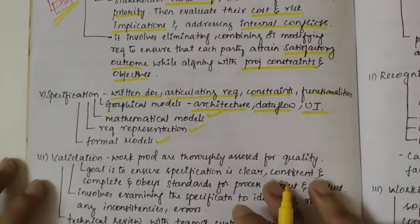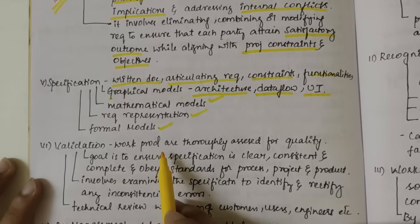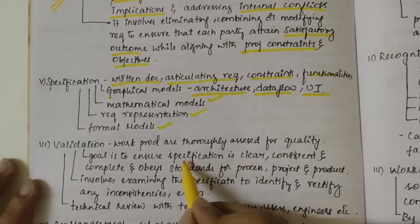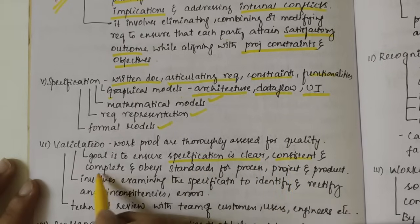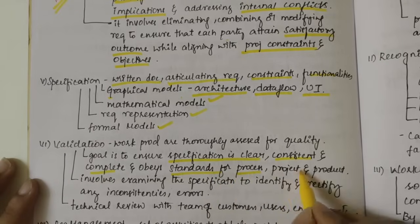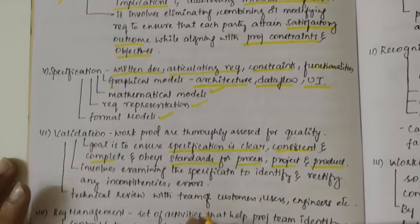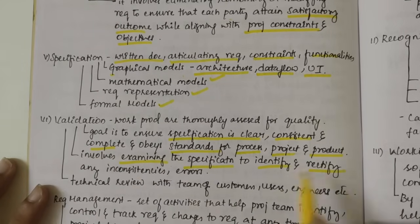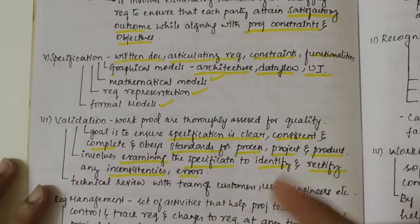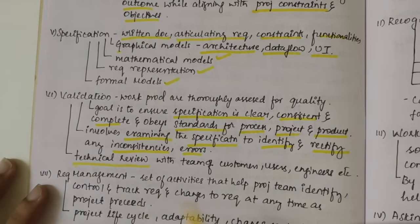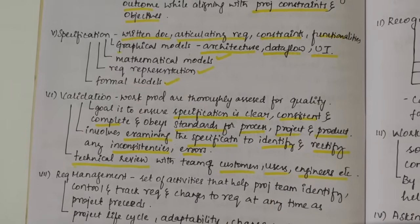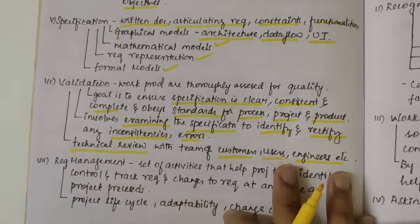After specification, we have Validation. Work products are thoroughly assessed for quality. Our goal is to ensure the specification is clear, consistent, and complete, and that it obeys standards for process, project, and product. Validation involves examining the specification to identify and rectify any inconsistencies or errors. To do this, we perform technical reviews with customers, users, and engineers to discuss loopholes and how to overcome and rectify them.